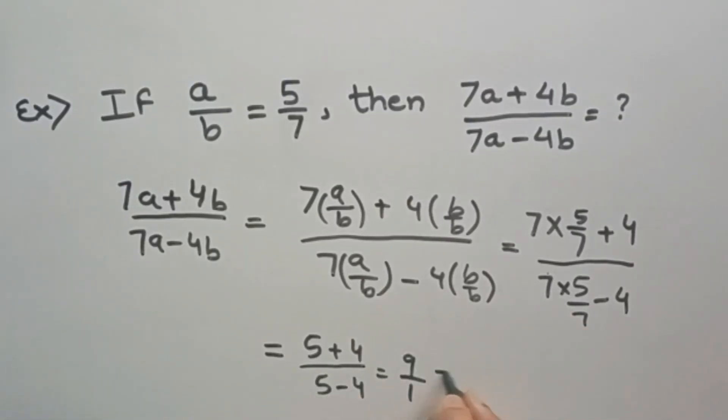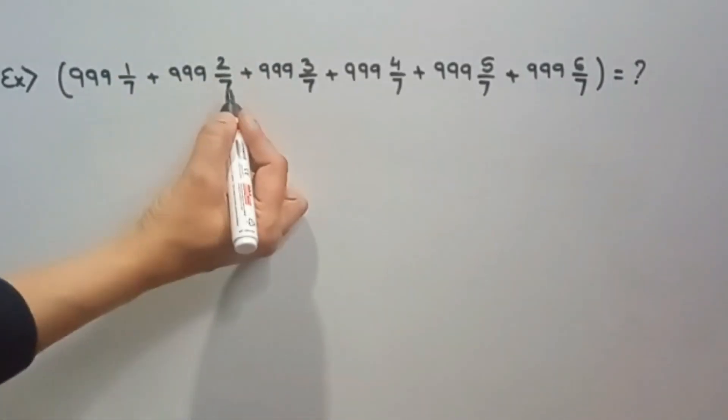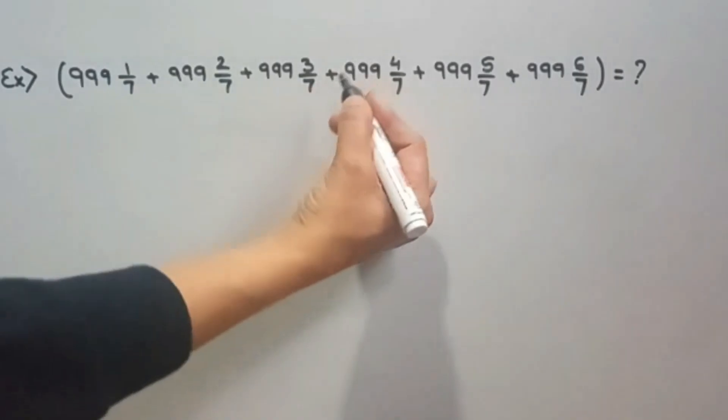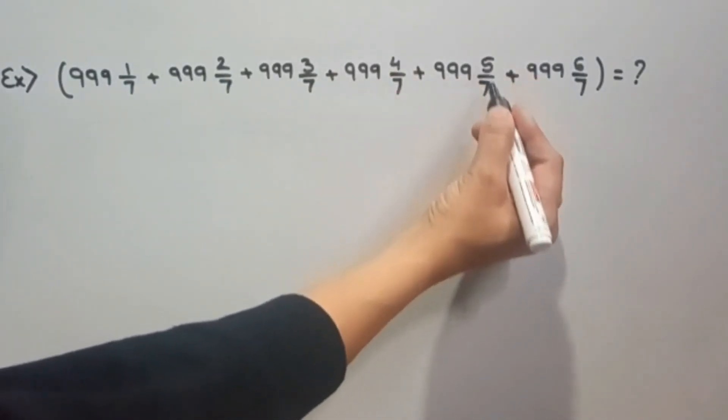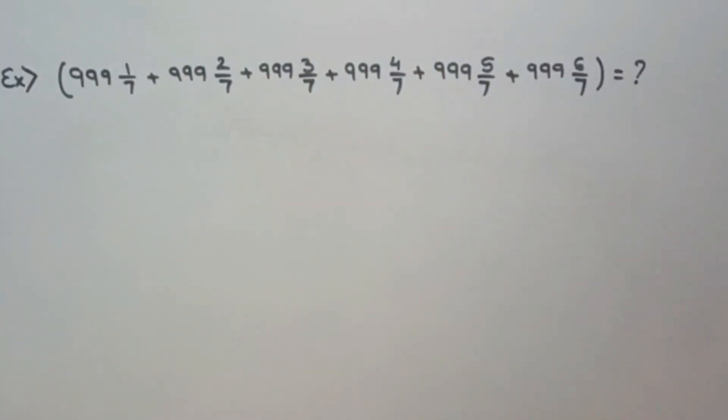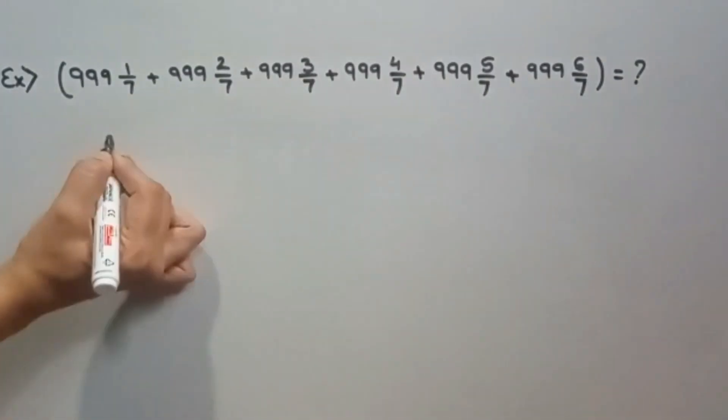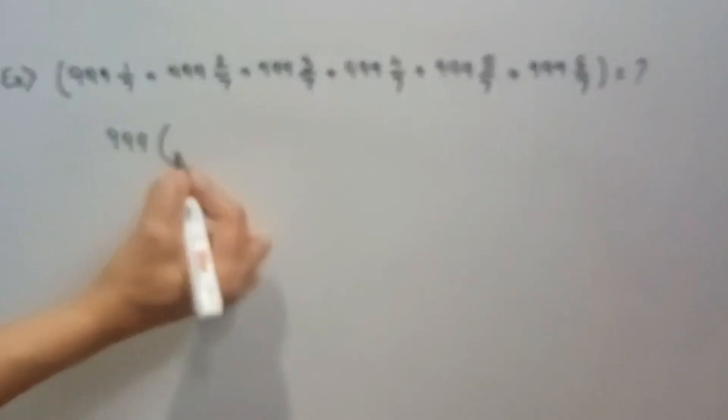Now we have to solve this problem: 999 times 1 by 7 plus 999 times 2 by 7 plus 999 times 3 by 7 plus 999 times 4 by 7 plus 999 times 5 by 7 plus 999 times 6 by 7. So what we will do here, we will first take this 999 out. This is common.